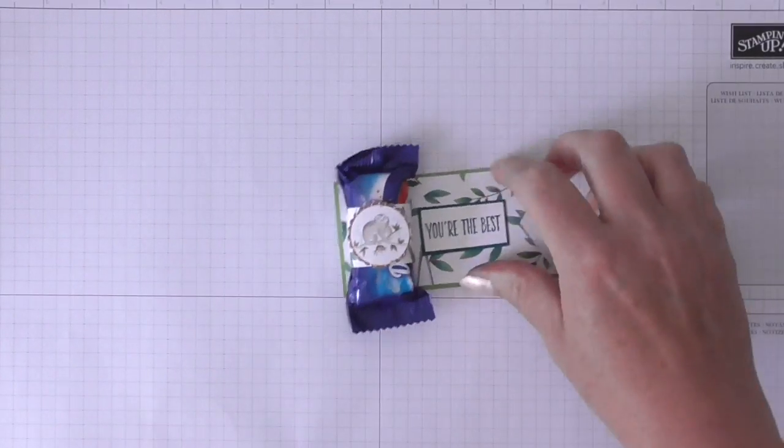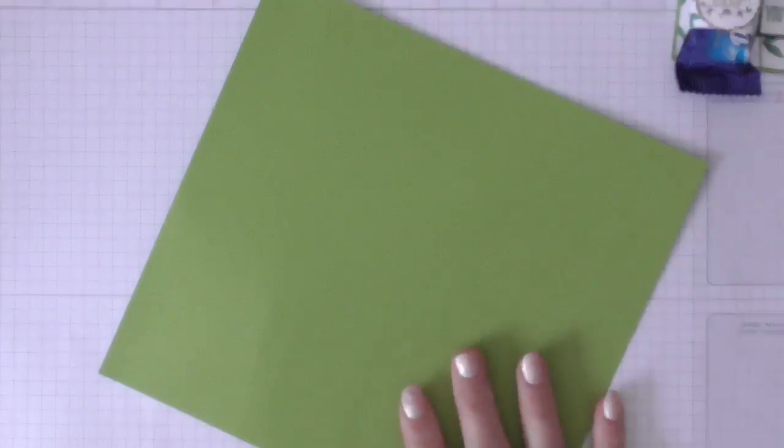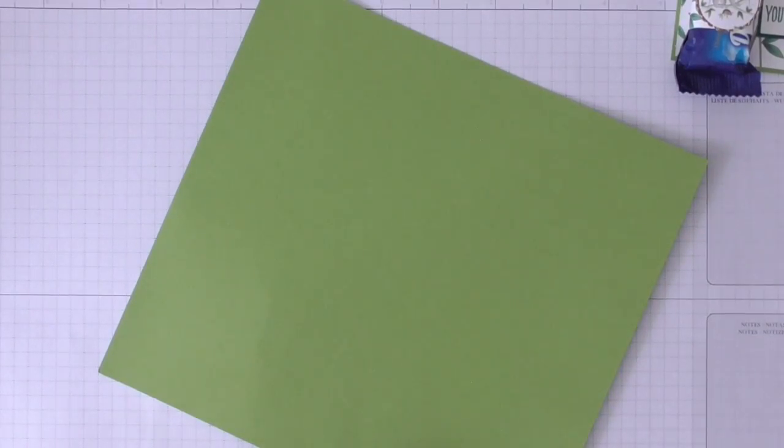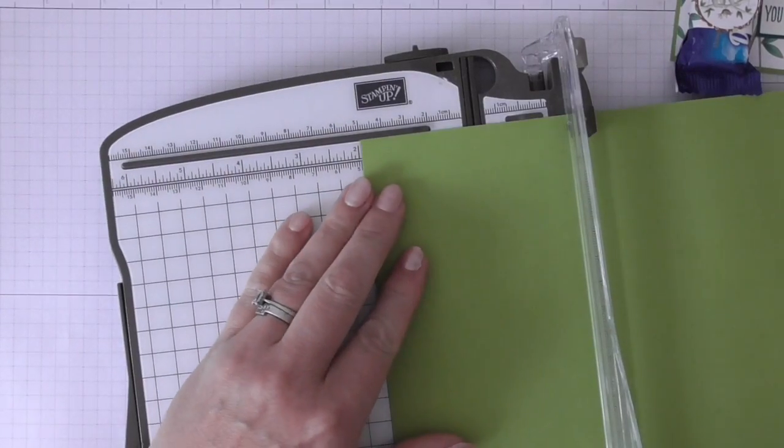First of all, I've picked beautiful Granny Apple Green, which is one of the lovely new Stampin' Up colors. I have cut this to 2 inches by 4 inches.